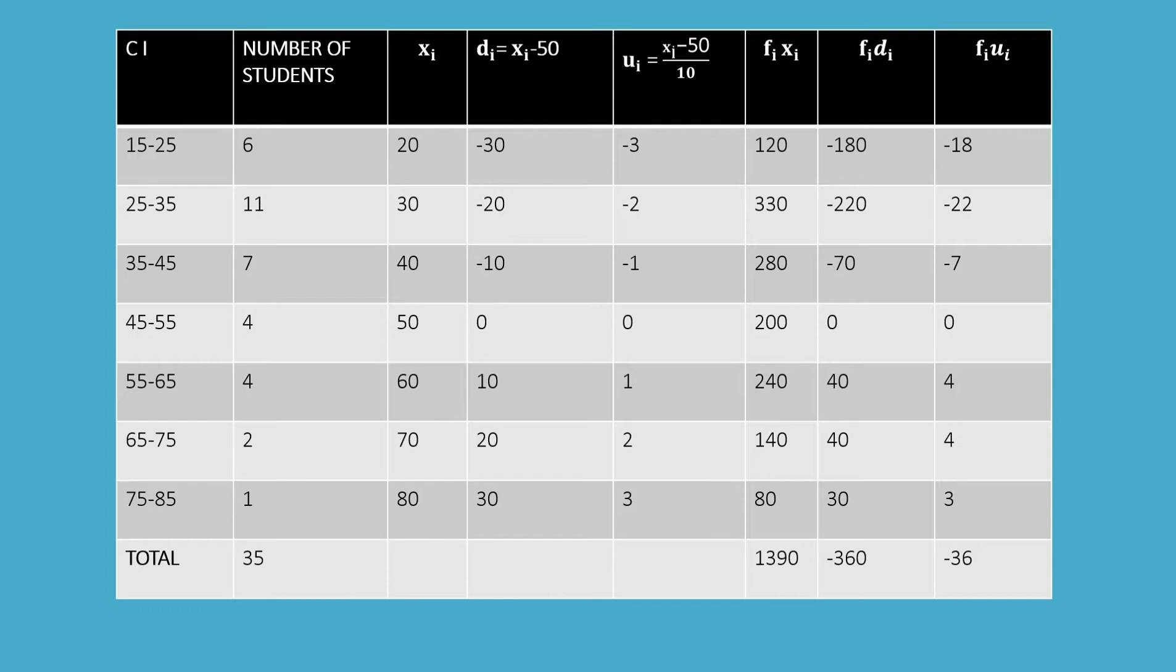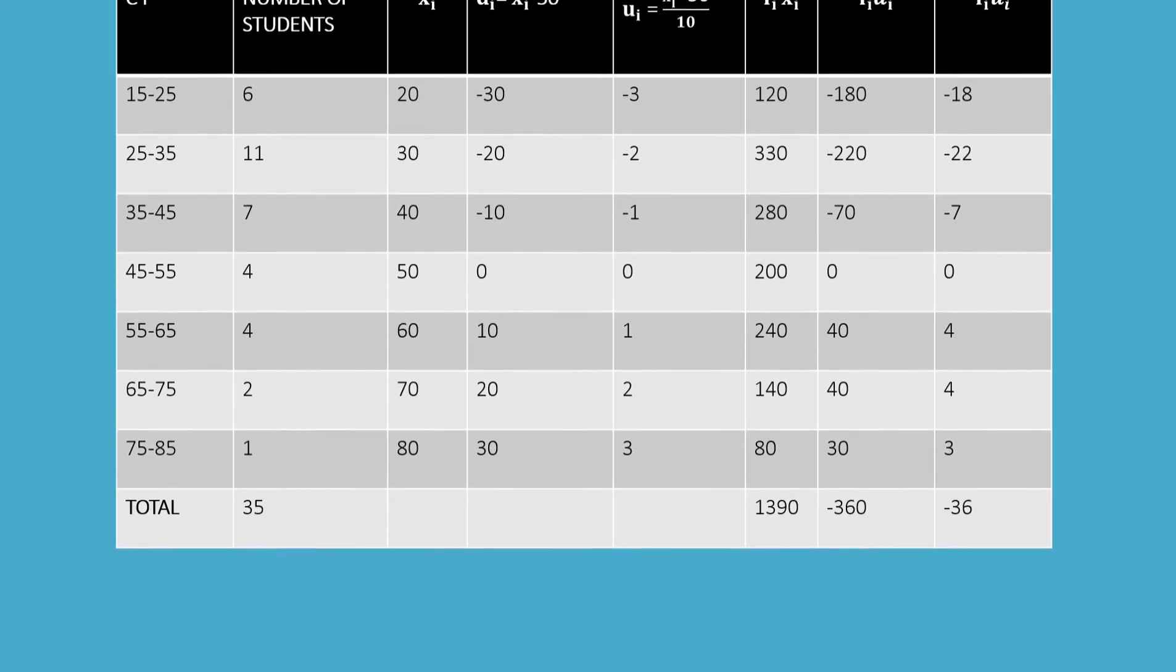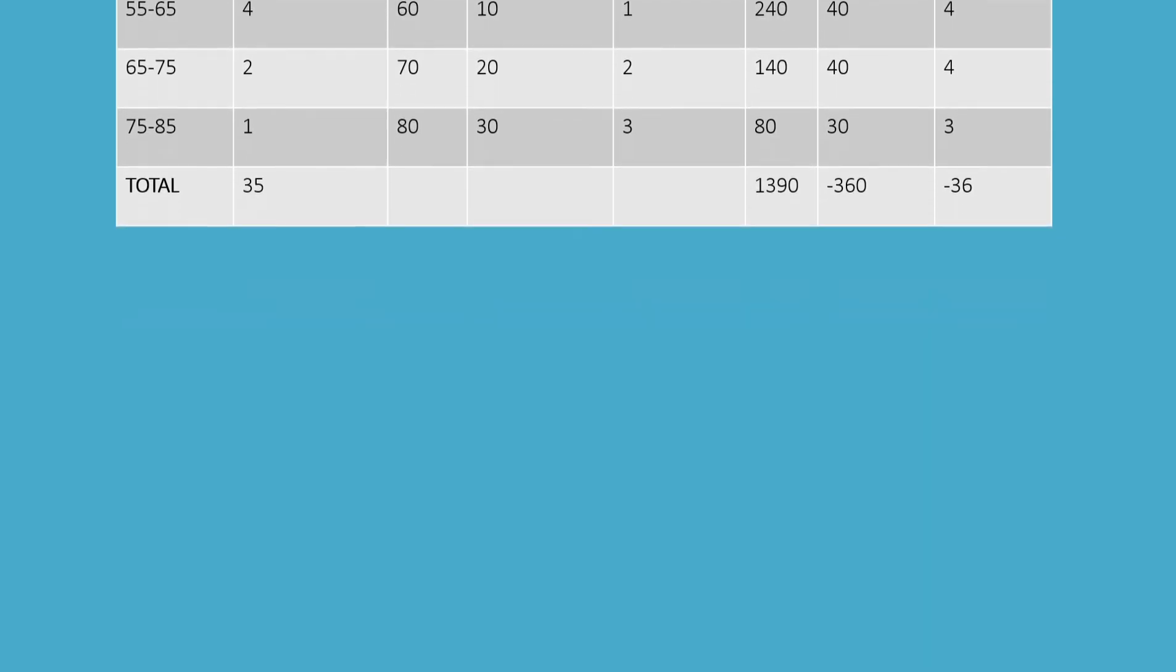The sum of f_i x_i is 1390, f_i d_i values with sum as minus 360, and f_i u_i values having sum minus 36. In this way we get all these values here.